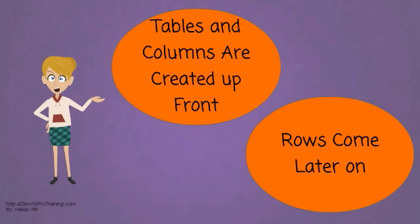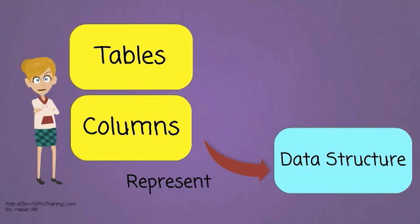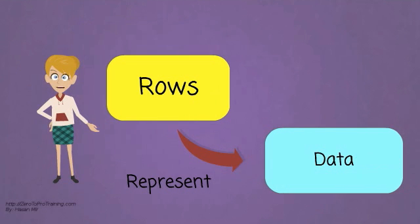You create tables and define columns up front. The rows come later on as you insert data into the structure. When we talk about tables and columns, we are talking about data structure. When we talk about rows, we are talking about the data.